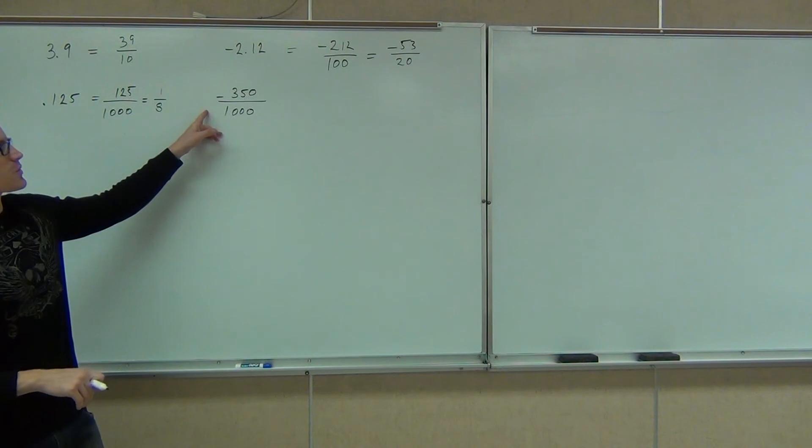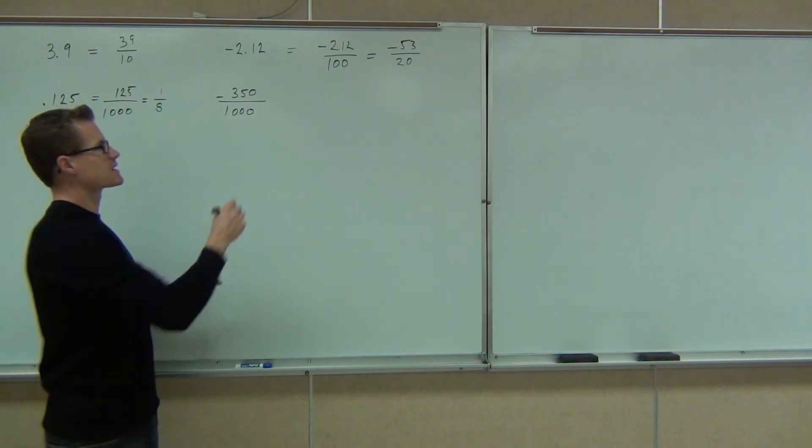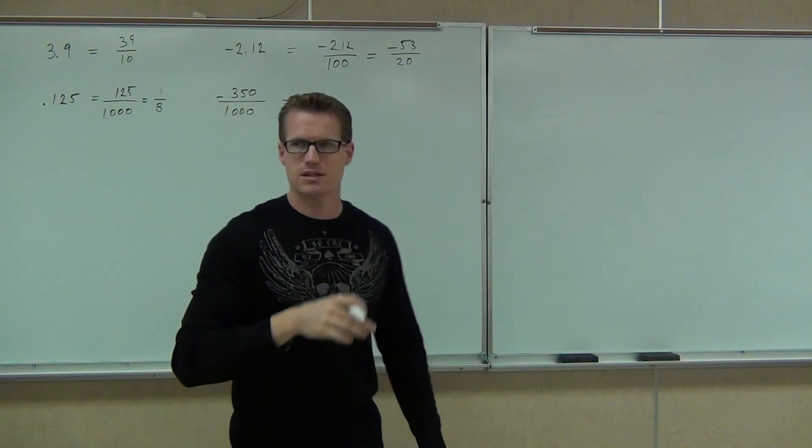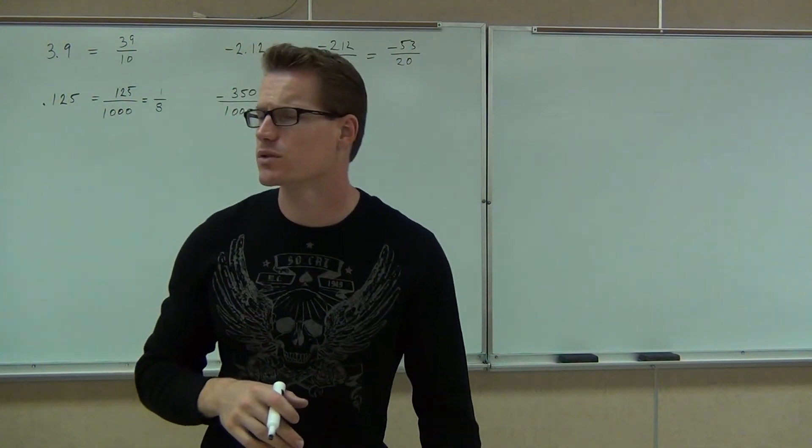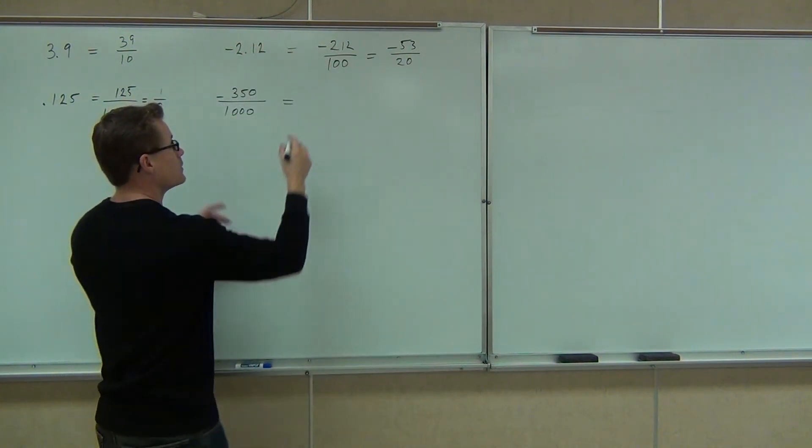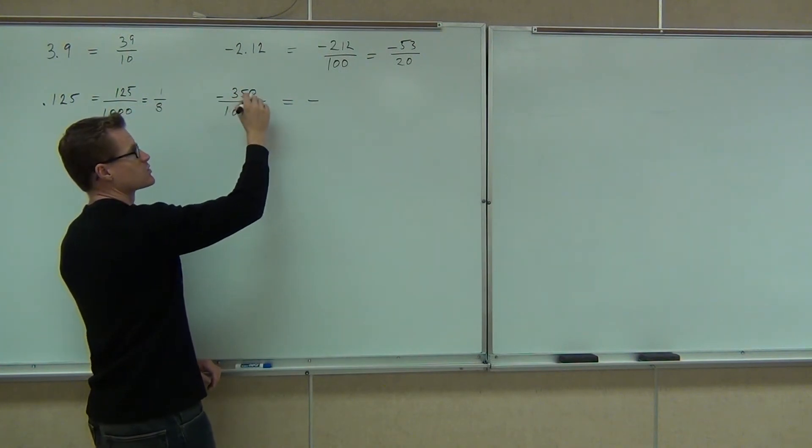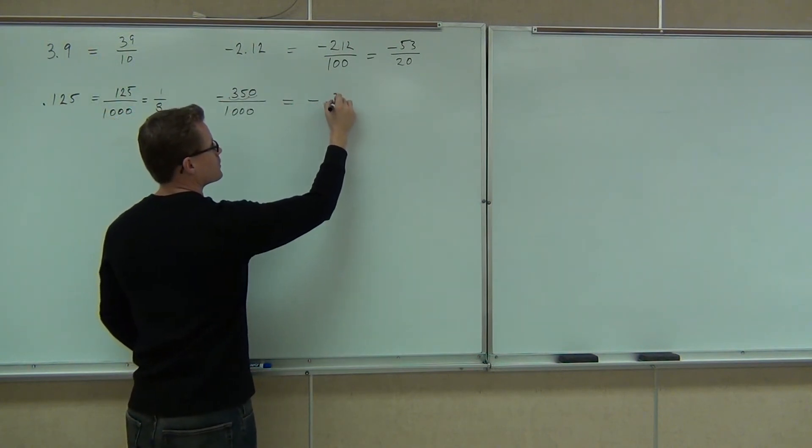Last up, negative 350 over 1,000, I'm going to write that as a decimal. If I write negative 350 over 1,000 as a decimal, what's it going to be? 0.3. Definitely negative. I'll give you that. So this says you move the decimal place, an imaginary decimal place, one, two, three spots for each zero.